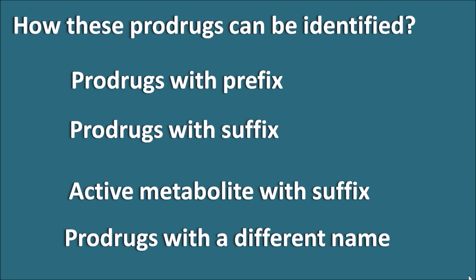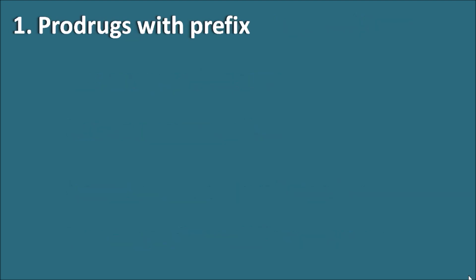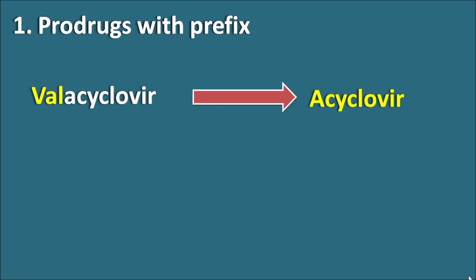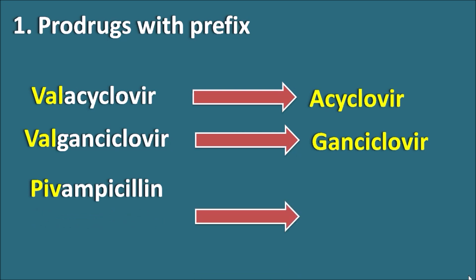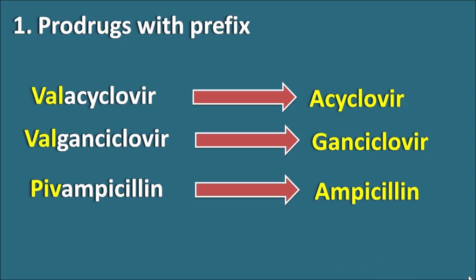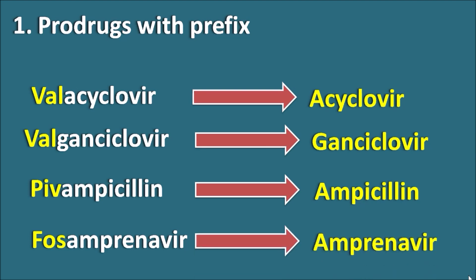Let us go through prodrugs with a prefix. Valacyclovir is a prodrug of acyclovir — an antiviral agent. Similarly, valganciclovir is a prodrug of ganciclovir, also an antiviral agent. Pivampicillin is a prodrug of ampicillin, a broad-spectrum antibiotic. Fosamprenavir is a prodrug of amprenavir, where 'fos' is a prefix used to indicate it is a prodrug. All these drugs have a prefix that indicates they are prodrugs.